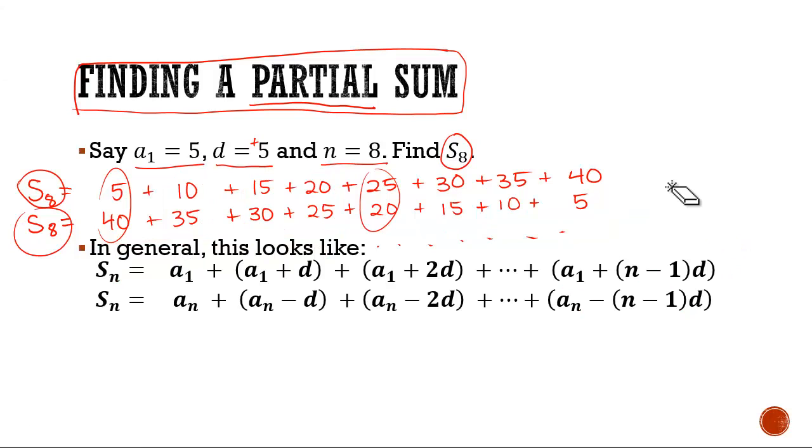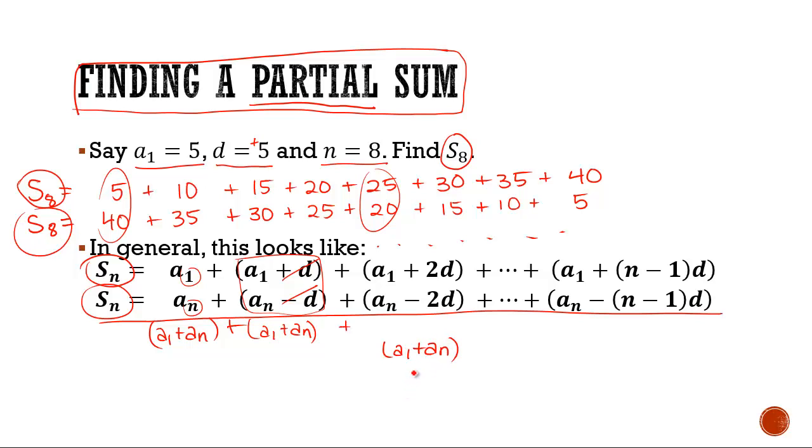Let's generalize this method. In general, you'd have your sum of the first n terms, where these are arithmetic sequences being added up into a series, and then the other one being reversed. Instead of starting with the first term, starting with the nth term. Now, when you add those up, notice what ends up happening is your sum is actually a₁ plus aₙ. And you'll notice if you add these, the differences will cancel, and you'll still have a₁ plus aₙ. What ends up happening is you'll have a₁ plus aₙ, but how many times? Well, it'll be n times. But since you'll have 2, you'll divide by 2.